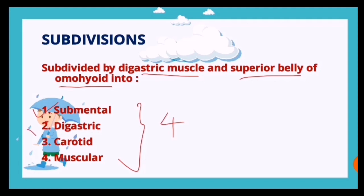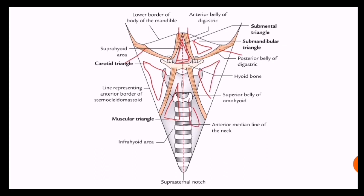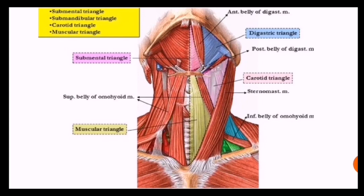There are four smaller triangles: the submental triangle, digastric triangle, carotid triangle, and muscular triangle. The submental triangle is between the two anterior bellies of digastric. The triangle formed between the anterior belly and posterior belly of digastric is the digastric triangle, then the carotid triangle and the muscular triangle.